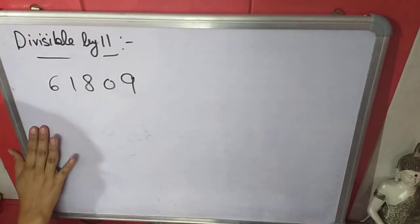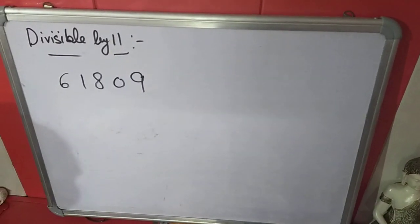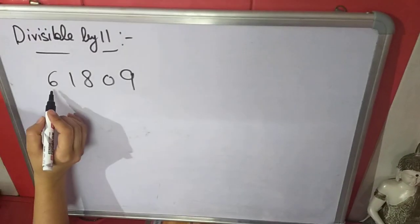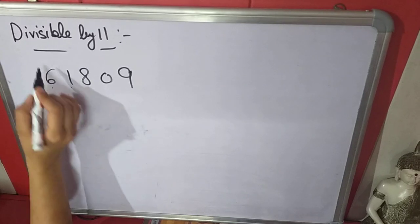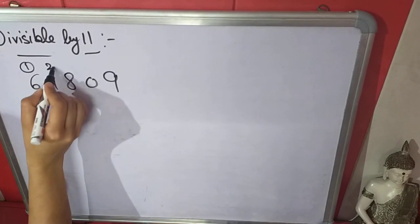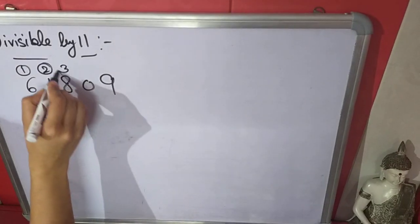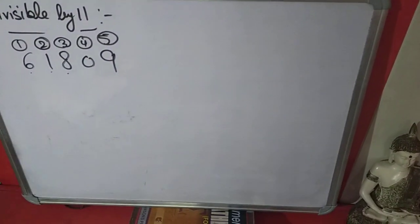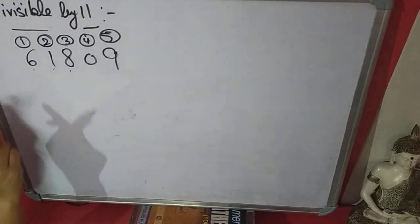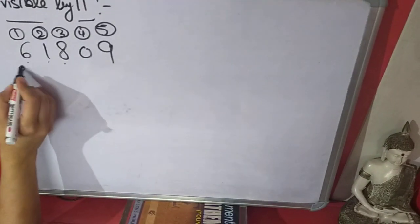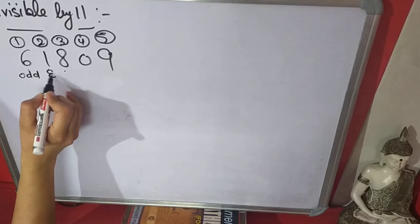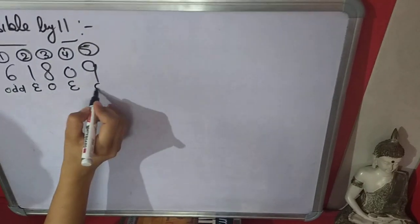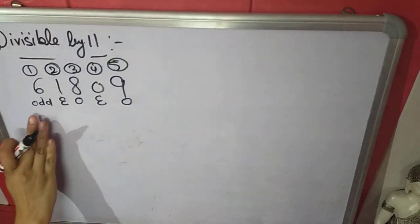The last rule is divisibility by 11. In this, we will use the odd or even method. We label the positions of digits: 1st, 2nd, 3rd, 4th, 5th. We assign odd to the 1st position, even to the 2nd, odd to the 3rd, even to the 4th, odd to the 5th. This sequence — odd, even, odd, even, odd — continues. The 1st place is 1, which is an odd number.